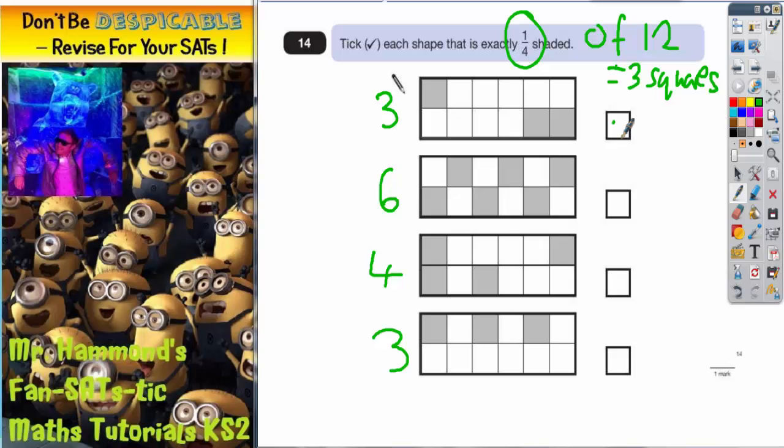So this one's got 3, so that's a quarter. This one hasn't, this one hasn't got 3, this one has got 3. That is a quarter. So it's actually the top and bottom ones we need to tick.